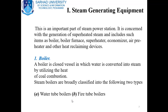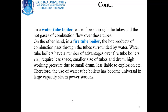A boiler is a closed vessel in which water is converted into steam by utilizing the heat of coal combustion. Steam boilers are broadly classified into two types: water tube boilers and fire tube boilers. In a water tube boiler, water flows through the tubes and the hot gases of combustion flow over these tubes.